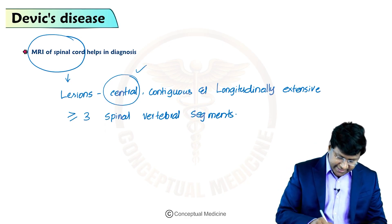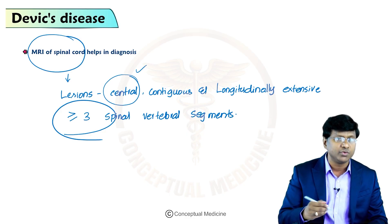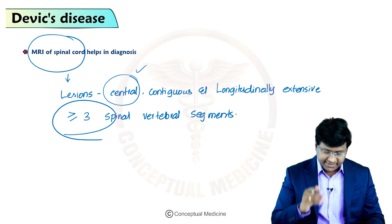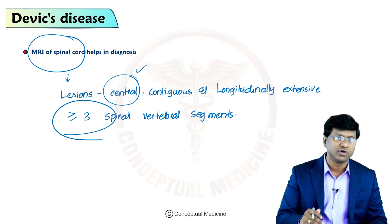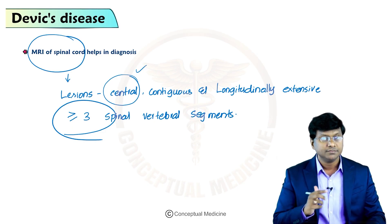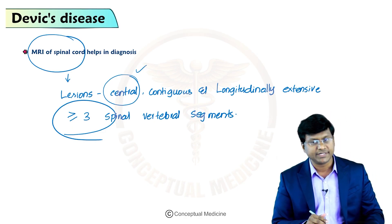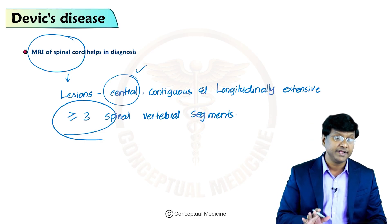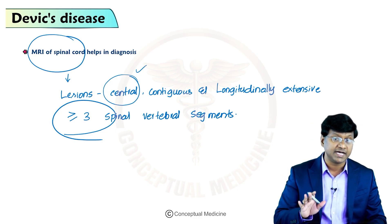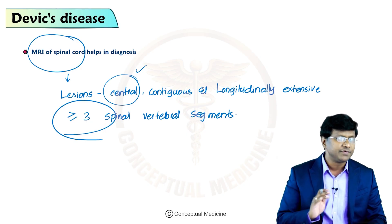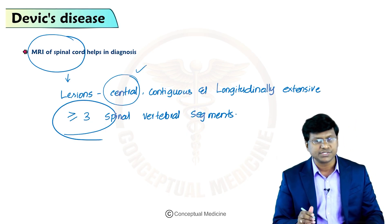In neuromyelitis optica, more than or equal to three vertebral segments are affected. That is the key difference in MRI involvement between multiple sclerosis and its variant neuromyelitis optica. MRI brain abnormalities are present in many cases but are quite distinct from multiple sclerosis lesions.